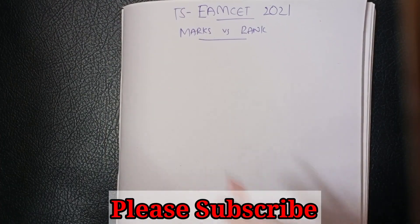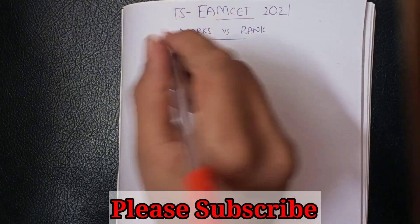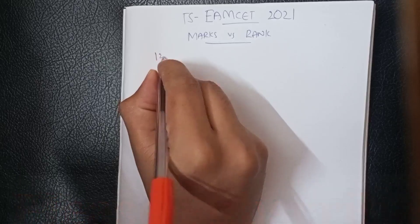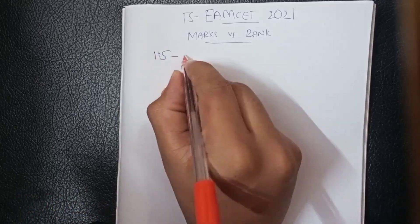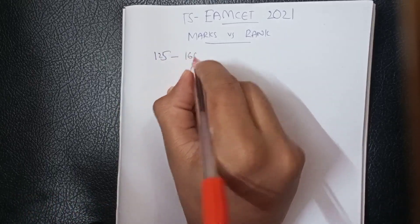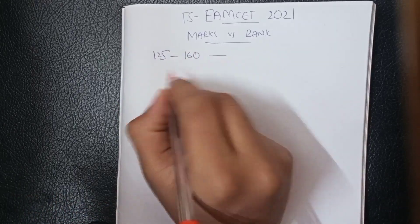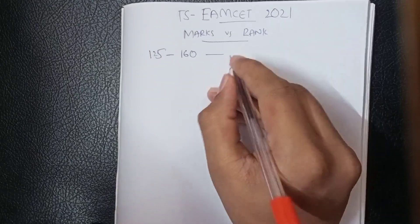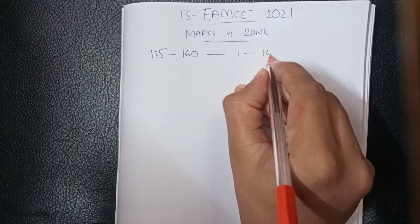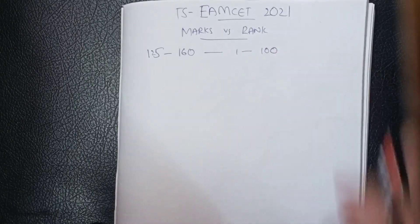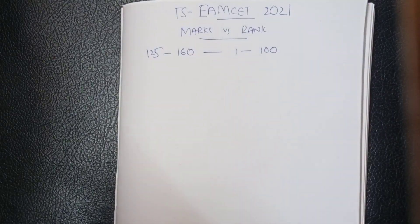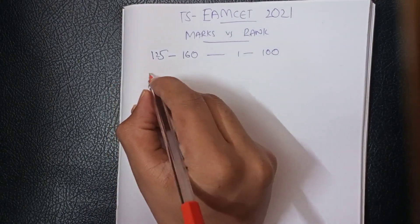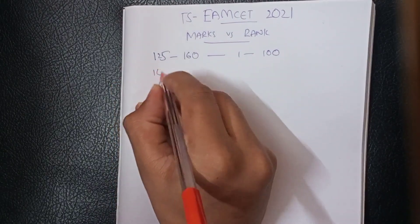Friends, we will look at marks for 125 and 162. For a random range, the rank is 1 to 100. Next, for the base range of 100 to 125, the rank falls in this bracket.